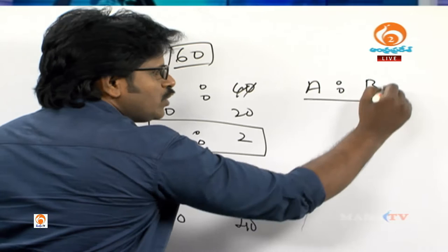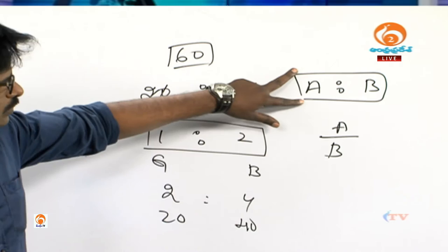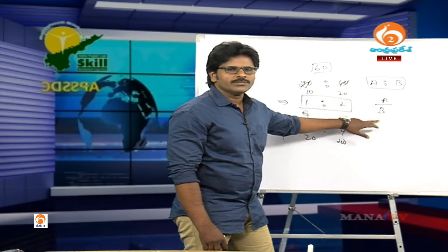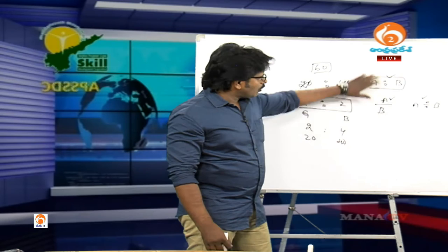We define ratio in the form of A is to B, written as A:B or A/B. Both are the same. A/B is also called a fraction. A is to B, A divided by B — these all refer to the ratio. The notation A:B is called a ratio and A/B is called a fraction.